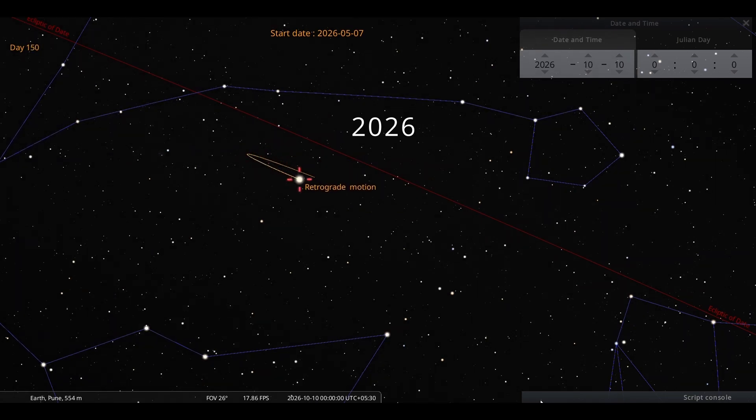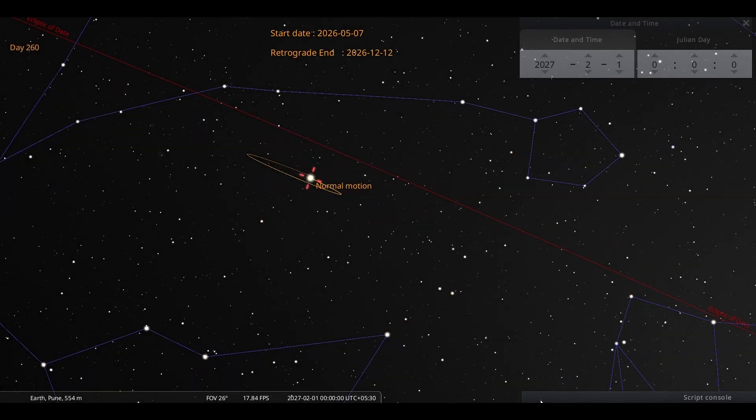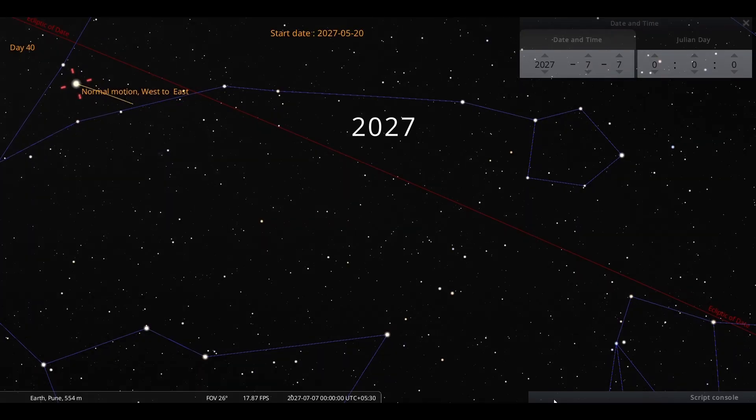As we know, the same pattern repeats every year. It just shifts position by approximately 12 degrees along the ecliptic.